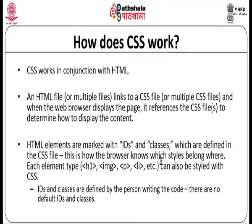CSS works in conjunction with HTML. You have an HTML file and link it to a CSS file. Whenever the browser wants to display the page, it refers to the CSS file and determines how to display the elements defined in the HTML page. HTML elements are marked with IDs and classes, which are referred to in a CSS file, and the browser applies the corresponding styles.